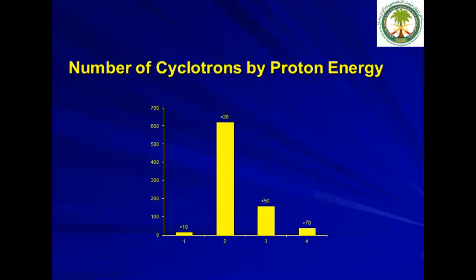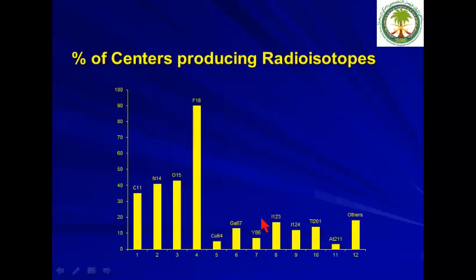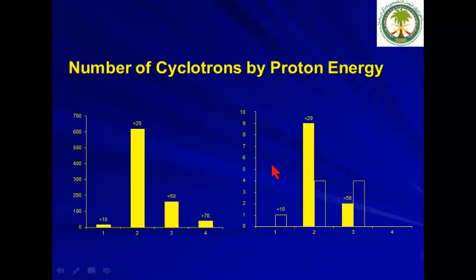Worldwide there are almost 800 cyclotrons. About 600 are less than 20 MeV, with others ranging between 50, 70 MeV and above. In terms of usage, 90% is used for F-18 production — mainly FDG and sodium fluoride — while others are used for thallium, gallium, and other radiotracers. Comparing GCC with the rest of the world, we show a similar trend: most cyclotrons are less than 20 MeV.